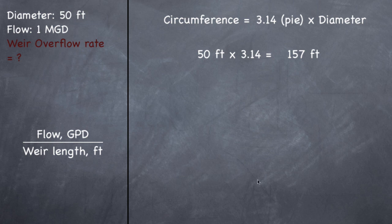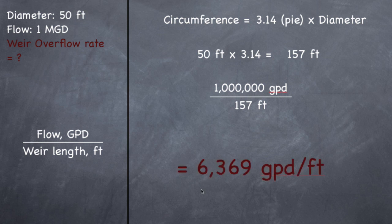So we found the bottom part. So now we need the top part, flow in gallons per day. So they give us the flow in MGD, which is a million gallons per day, but we want gallons per day. So go ahead and multiply one by a million to get a million gallons per day. Divided by 157 feet, which is right all here, this is the formula, should give you 6,369 gallons per day per foot. So one foot of weir in one day will have 6,369 gallons come over it. All right, let's move on.